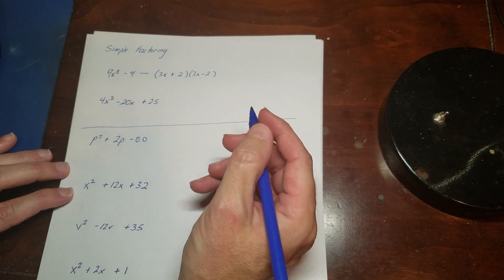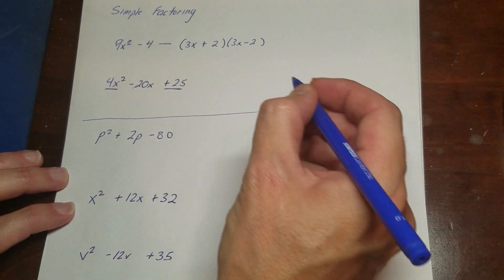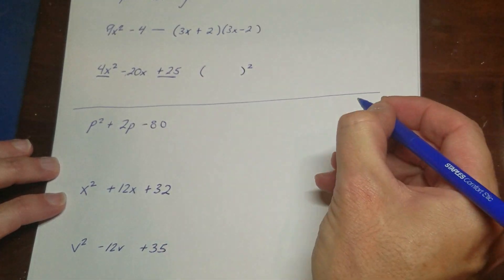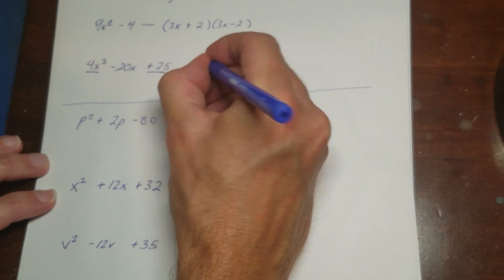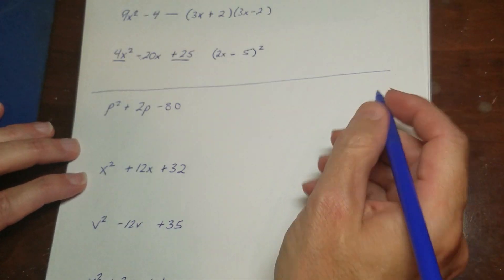The next one here is a perfect square because I have a 4x² on this end and a 25 on this end. So I know they're squared. I know this is a 2x. I know this is a 5. And I know this is a minus in the middle.